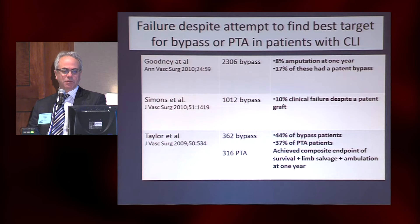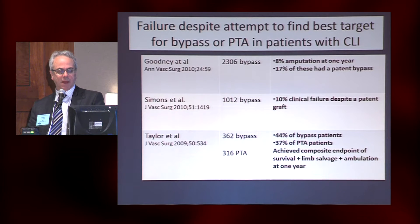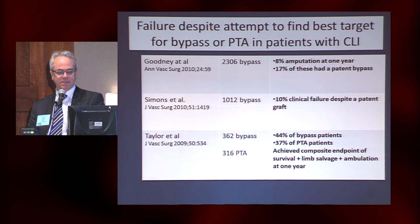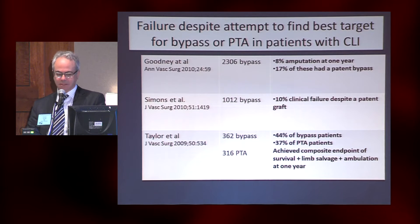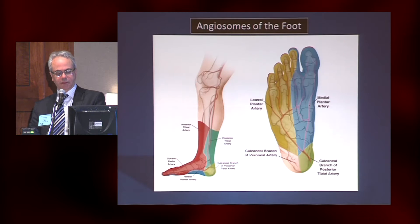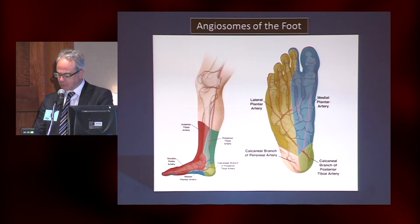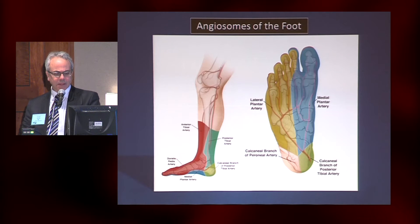It's been mentioned that we don't always get the result we want with a bypass — there are failures, and I think some of this has to do with tibial disease. It's also clear that in intervention, if you don't get all the way down, or if you embolize — and I think embolization is an underappreciated complication we see with interventions.